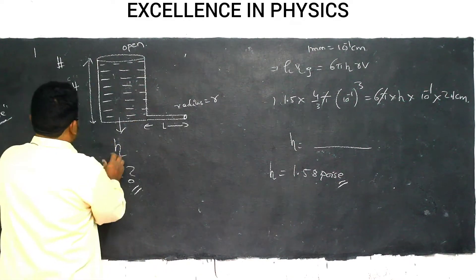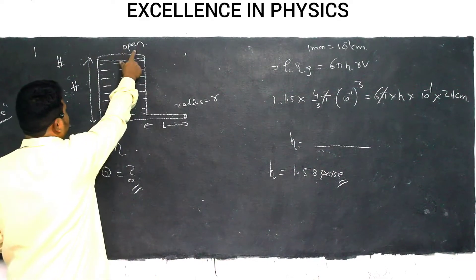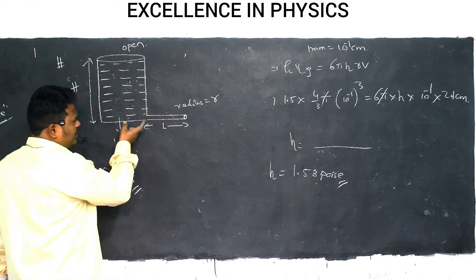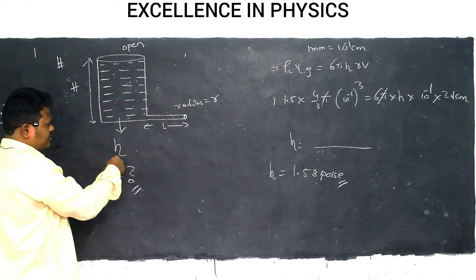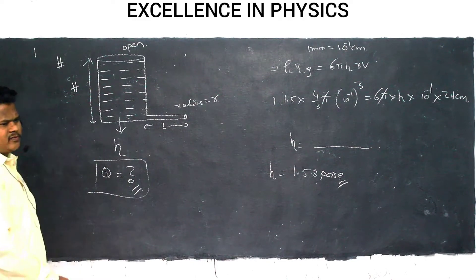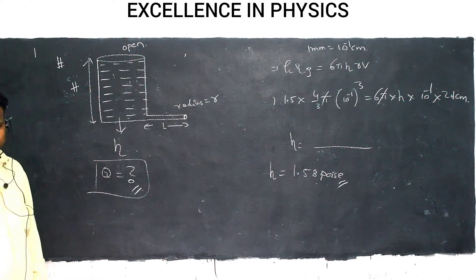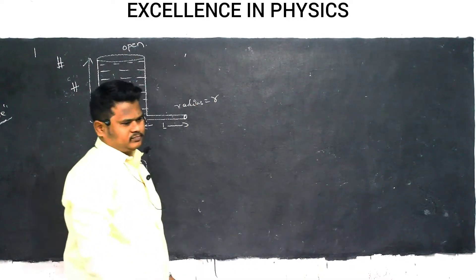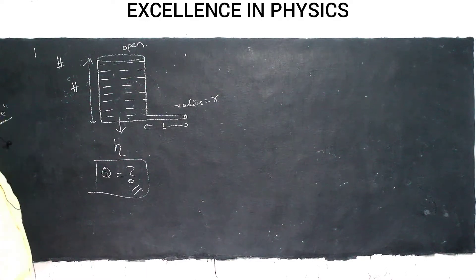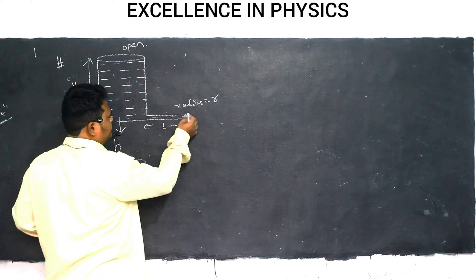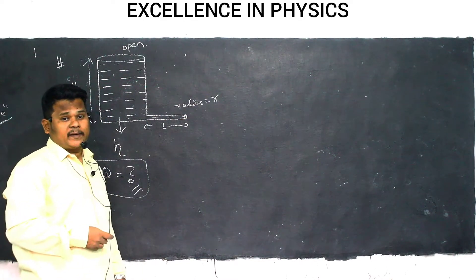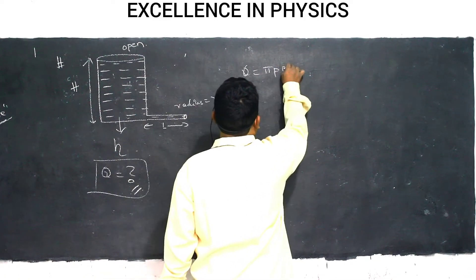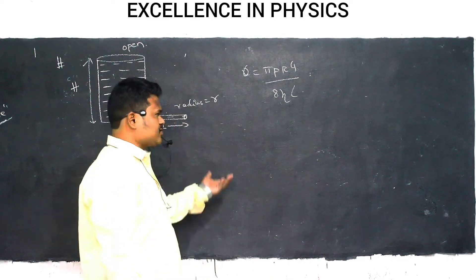Another problem: A cylinder of height h is completely filled with liquid, open at the top to atmosphere. At the bottom, a small capillary of radius r and length l is fixed. Coefficient of viscosity is η. Find the rate of flow q. Seeing a pipe, immediately apply Poiseuille's equation: Q = πPr⁴ / (8ηl).